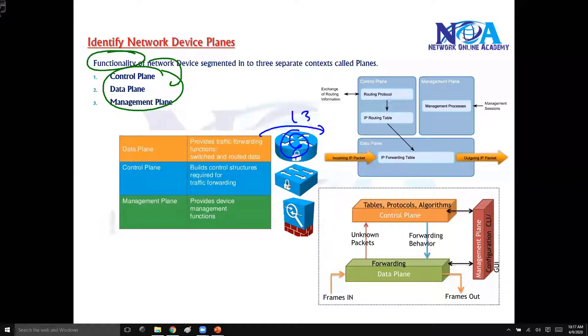A switch is going to forward packets based on MAC addresses, or L2 addresses. Firewalls provide security policies — they forward or deny traffic.